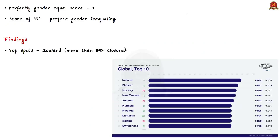If the score is either 100 percent or 1, it means there is perfect gender equality. But if the score is 0, it is perfect gender inequality. Apart from this, the report also examines the drivers of gender gap and outlines the policies and practices needed for a gender-inclusive recovery.